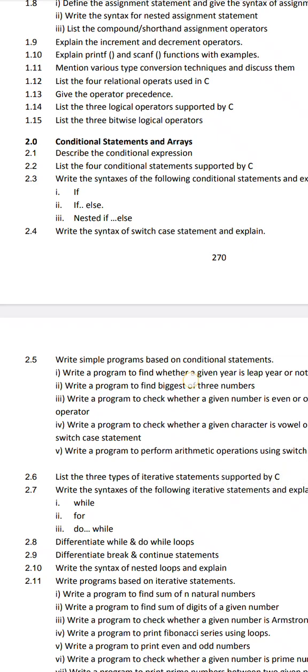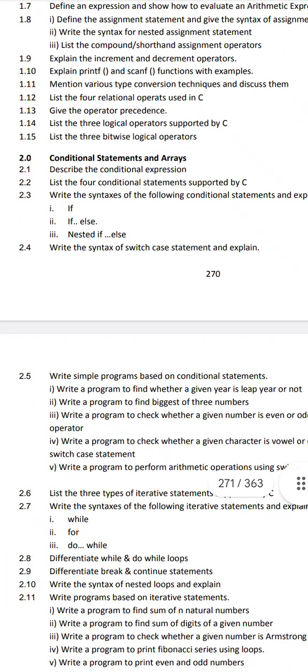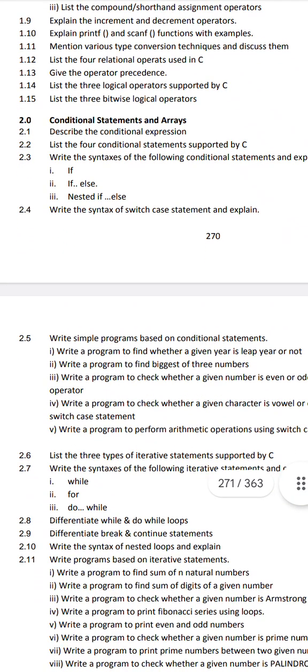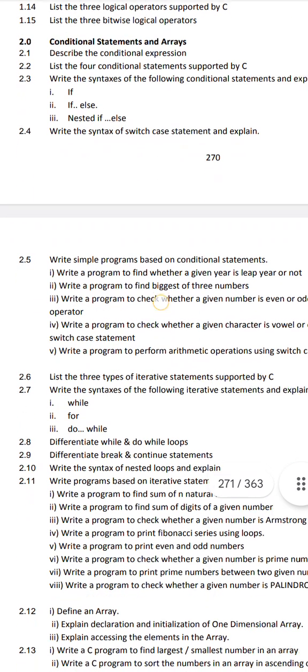Write the syntax of the following conditional statements and explain: if, if-else, if-else-if, nested if. You need to know the syntax, flowchart, example, and program for each. For if: definition, syntax, flowchart, example program. For if-else: definition, syntax, flowchart, example. Even if you skip the flowchart, you can use the syntax, definition, and program. That's an important essay — question 2.3. Question 2.7 is while loop — syntax, flowchart, example program; for loop — flowchart, example program and syntax; do-while is the same.